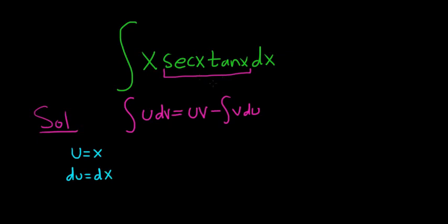If we had chosen u to be secant tangent, then the derivative would be a messy product rule.